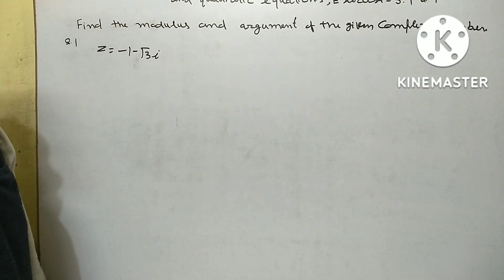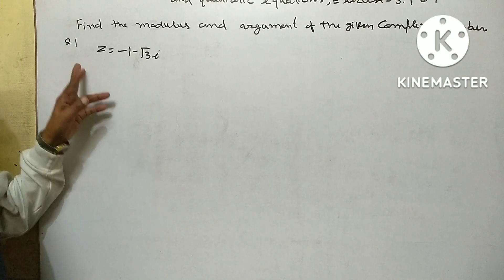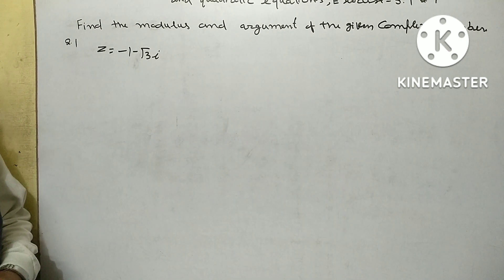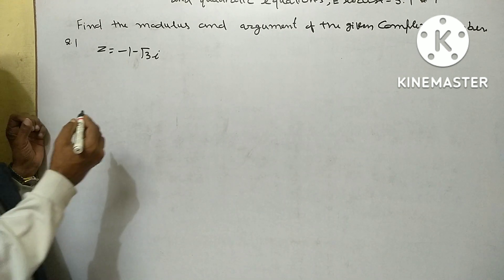Find the modulus and argument of the given complex number. Question first, z equals minus 1 minus root 3i. So now solution.